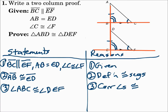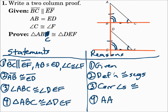Since segment BC is parallel to segment EF, we have two parallel lines cut by a transversal. In this case, there are corresponding angles — not alternate interior angles — so angle ABC is congruent to angle DEF because corresponding angles are congruent when lines are parallel. Now we have a pair of angles, the next pair of angles, and the next pair of sides. Triangle ABC is congruent to triangle DEF by Angle-Angle-Side.